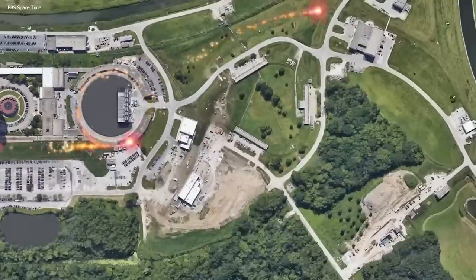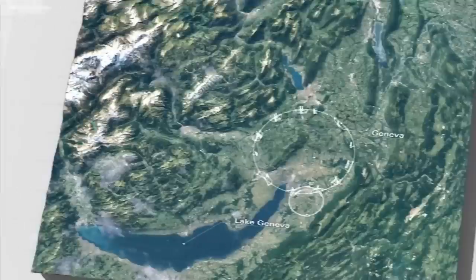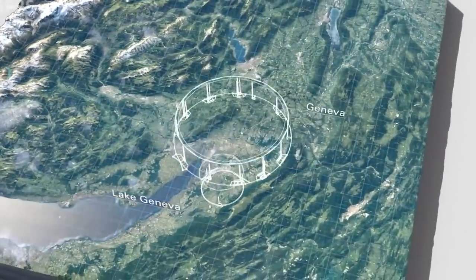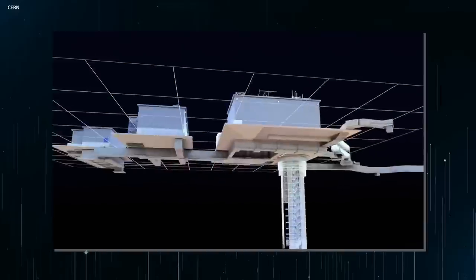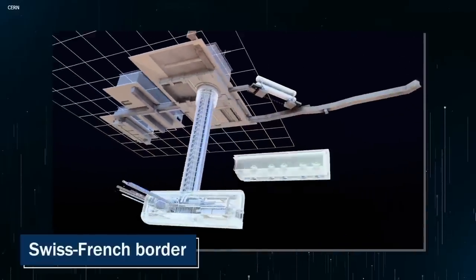First off, let's talk about the sheer size of this thing. The LHC is a circular tunnel that's 27 kilometers in circumference, buried beneath the Swiss-French border.